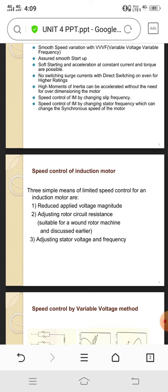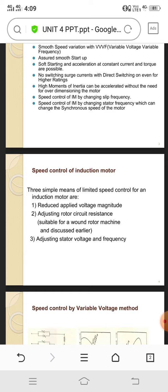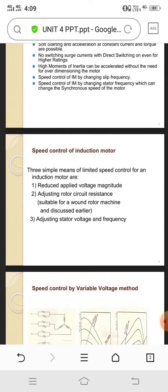Speed control characteristics clarify three categories: one is reduced applied voltage magnitude, adjusting rotor circuit resistance, and adjusting stator voltage and frequency. These three classifications are important to define the speed control of induction motor.